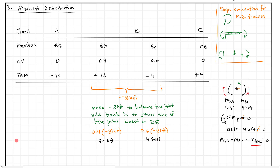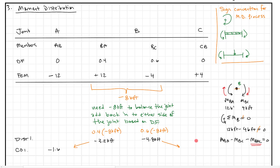We're not done yet, because when we add moment to one side of a joint, it impacts the other side of the beam. So we carry over — this is Carry Over 1, CO1. We take half of the moment just distributed and bring it to the far end. Half of negative 3.2 is negative 1.6 kip-feet, carried over to joint A. And half of negative 4.8 is negative 2.4 kip-feet, carried over to joint C. Now our internal joint is balanced and the sum of moments goes back to zero.